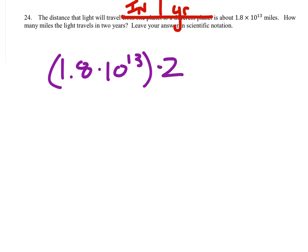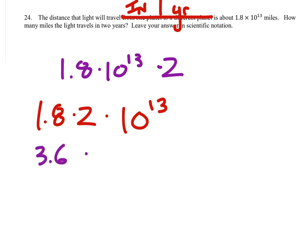And once again, we don't really need the parentheses since it's all multiplication. And we can move stuff around by the commutative property. So 1.8 times 2 would be 3.6 times 10 to the power of 13.